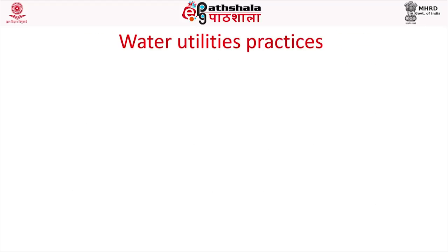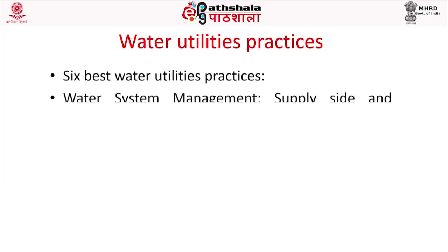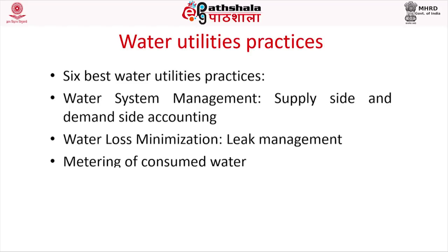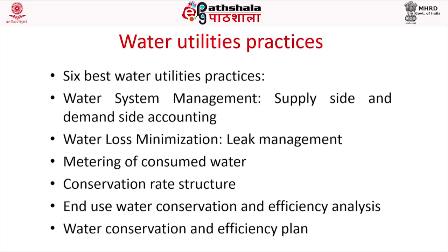There are 6 best water utility practices. First is water system management, that is supply side and demand side accounting. Second is water loss minimization, such as leak management. Third is metering of consumed water. Fourth is conservation rate structure. Fifth is end use water conservation and efficiency analysis. Sixth is the water conservation and efficiency plan.